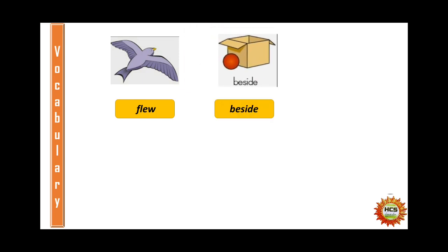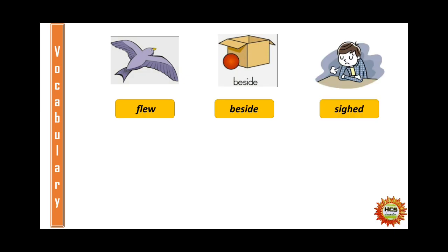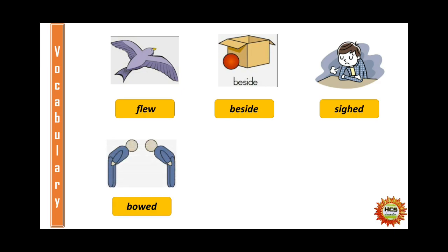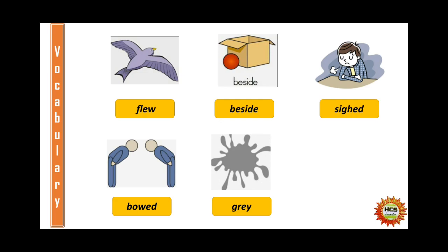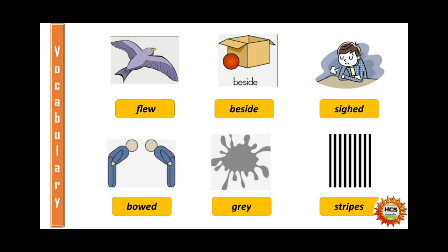Next word is 'beside.' The ball is beside the box — beside means next to. Next word is 'sigh.' Sigh means to exhale, as in a sigh of relief. Next word is 'bowed' — it means to bend down. Look at the picture, they are bowing. Next word is 'gray' — gray is a color, spelled G-R-E-Y. The elephant is gray in color. Next word is 'stripes,' spelled S-T-R-I-P-E-S. These are the stripes.